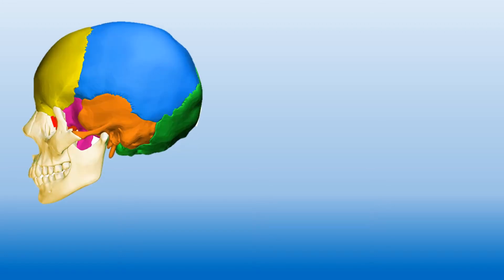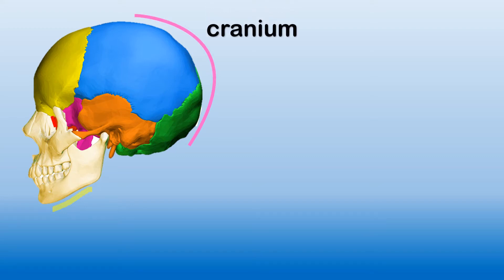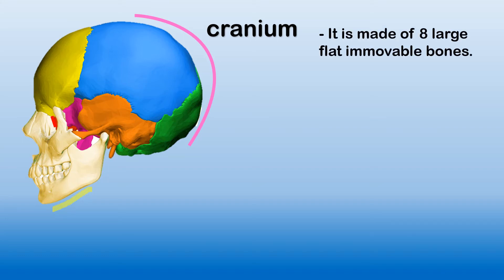Let's understand the human skull a little more. For better understanding, let's divide the human skull into two parts. One is the colorful part and the other is the white part. The white part contains the facial bones, which give shape to our face. The colorful part is known as the cranium, and it protects our brain. This cranium is made up of eight large flat immovable bones — immovable meaning bones that cannot move.